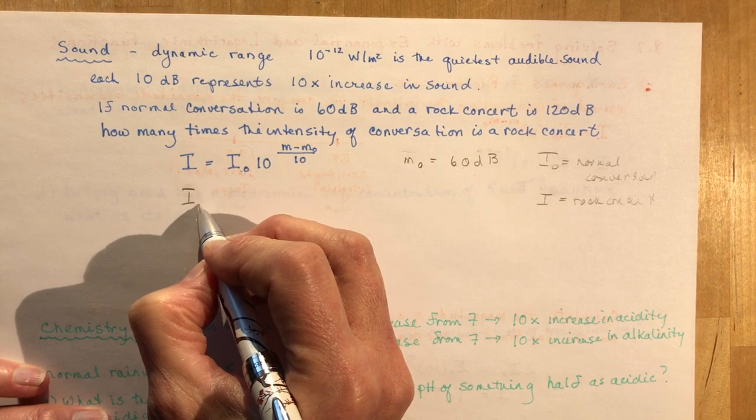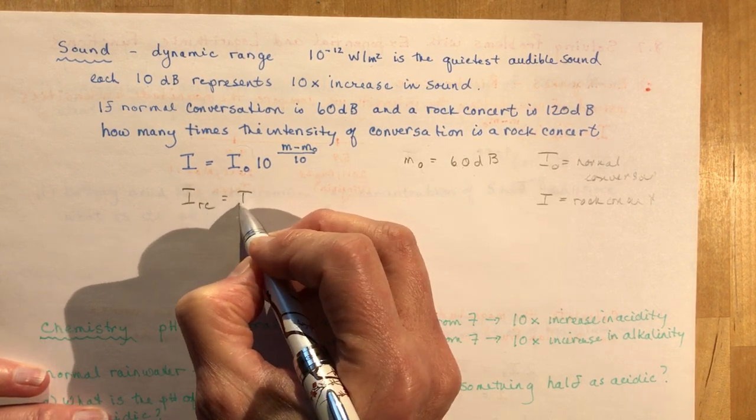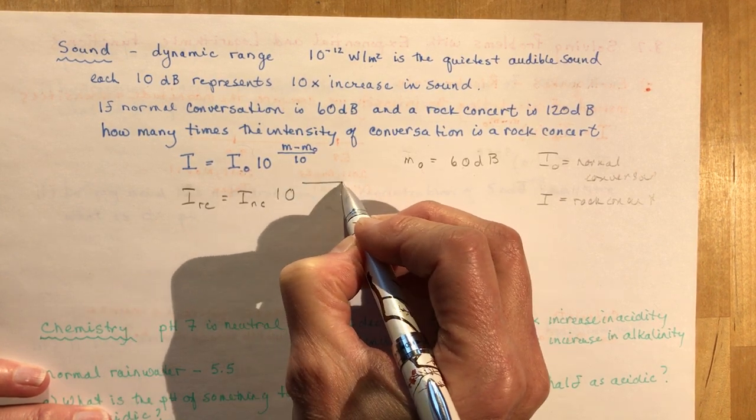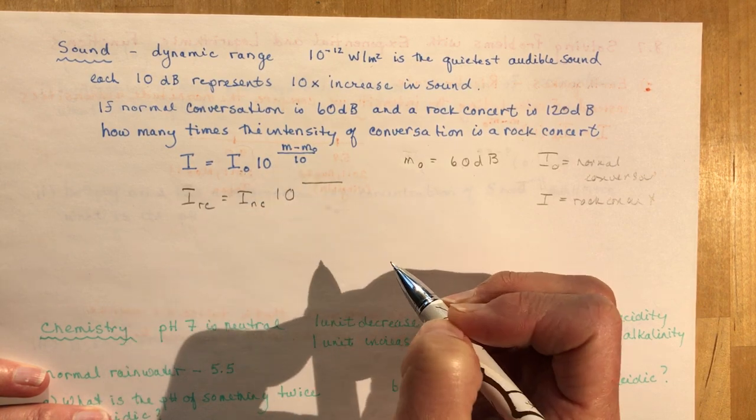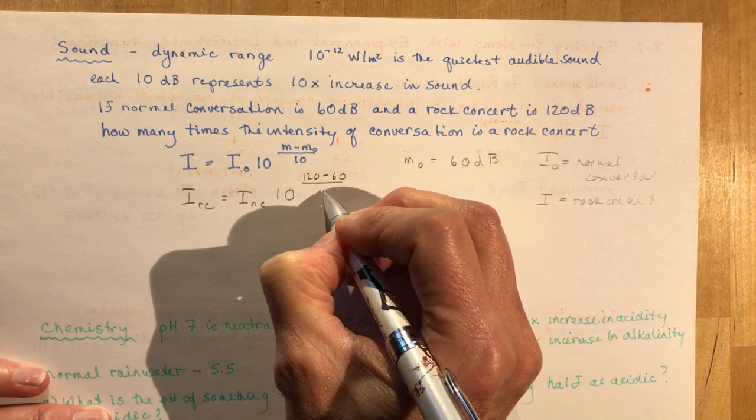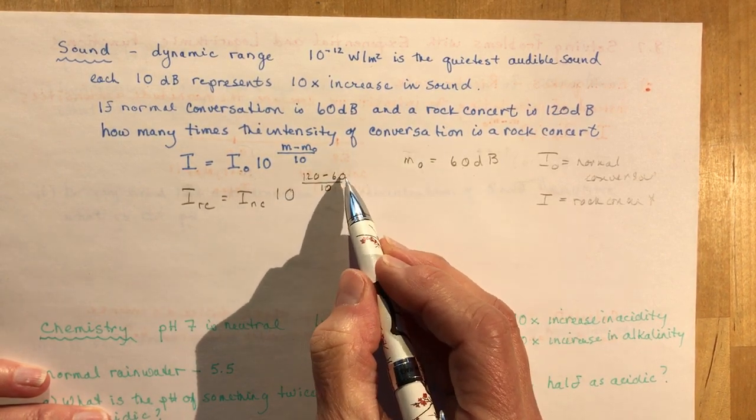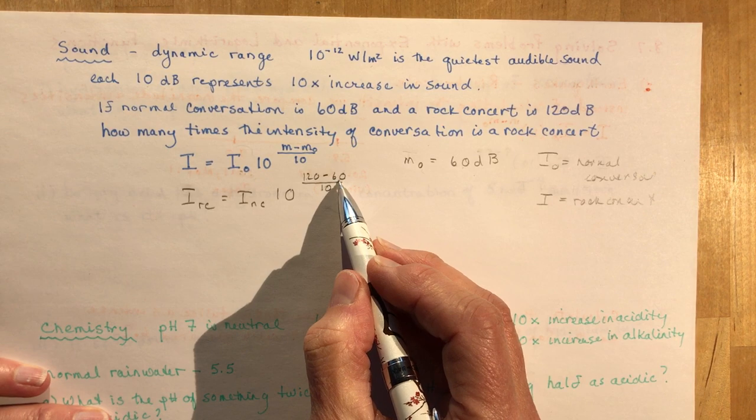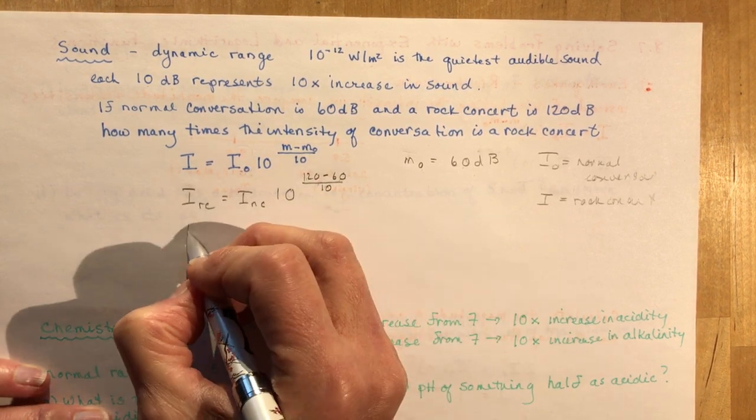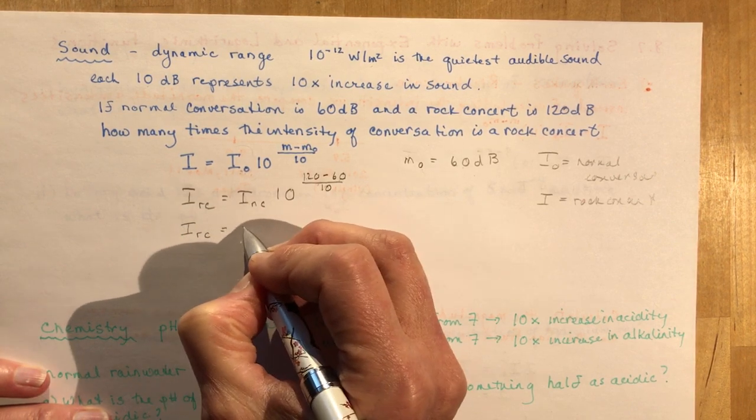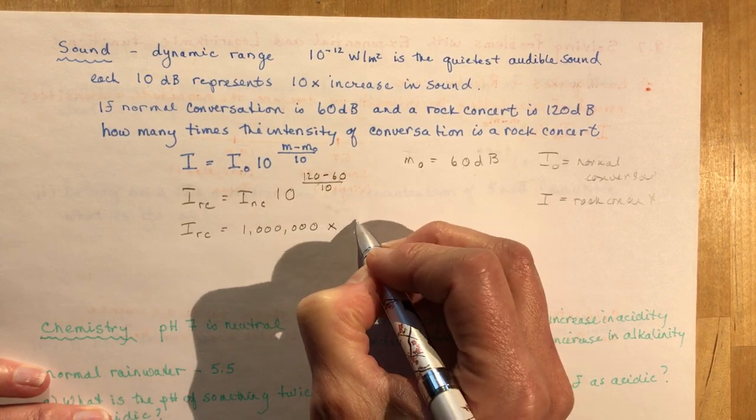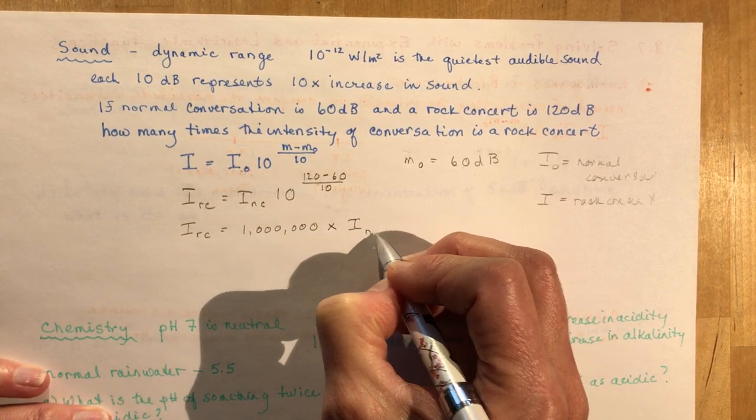So now all we have to do is plug it in. The rock concert is going to be the intensity of normal conversation times 10 to the power of M, which is our rock concert, so that's 120 minus 60 over 10. 120 minus 60 is 60 divided by 10 is 6. So 10 to the power of 6, that would be a million.